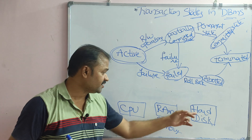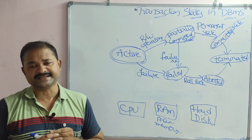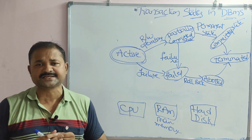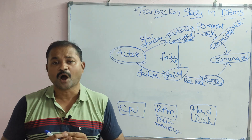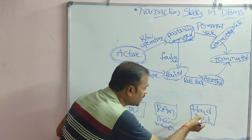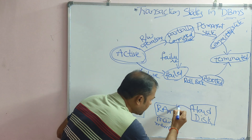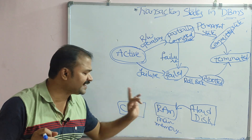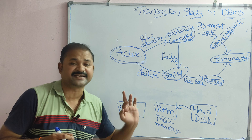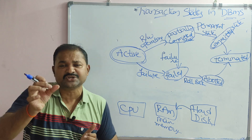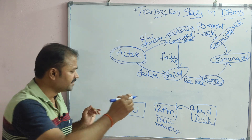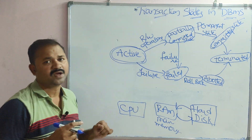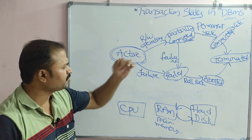Initially the program is stored in hard disk. It is the duty of the operating system to transfer the program or transaction from hard disk into RAM. Whenever the transaction is in RAM, the CPU executes it. Once execution is over, the operating system transfers the transaction back to the hard disk.